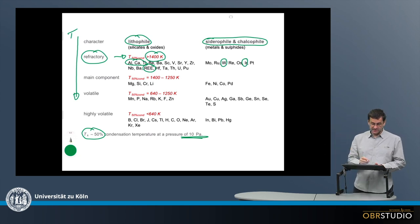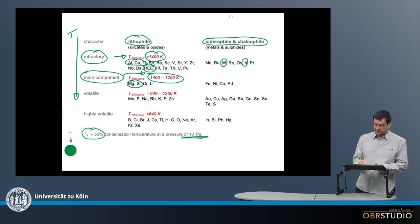Next in this condensation sequence are the main components. These are called main components because elements like magnesium and silicon condense at these temperatures. The temperature range here is 1400 to 1250 Kelvin.